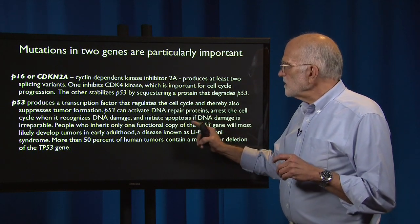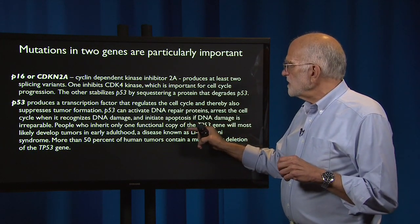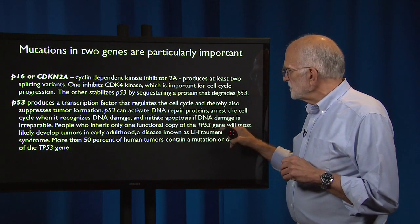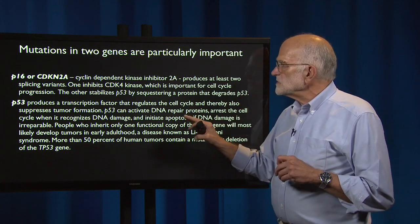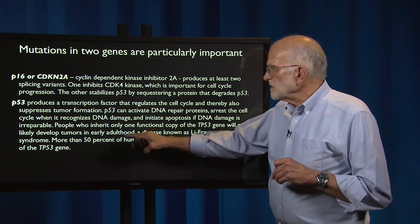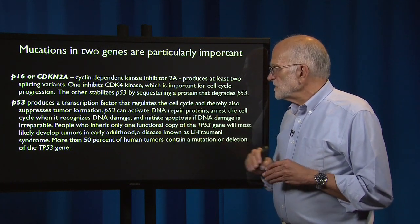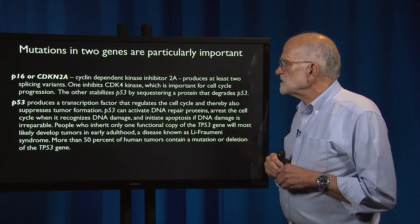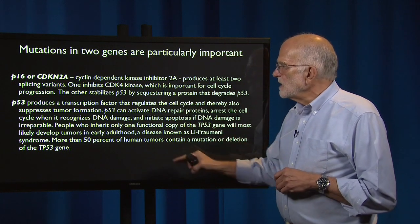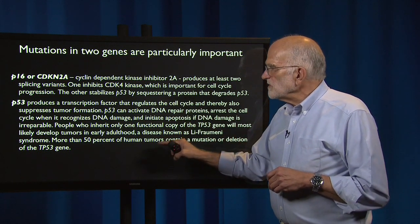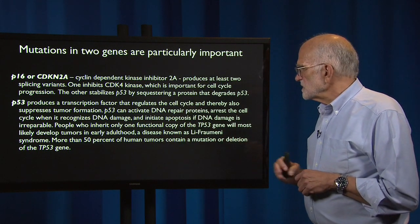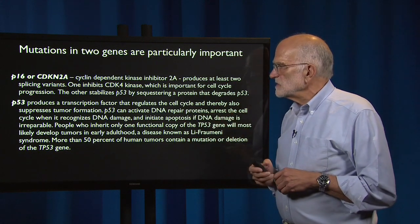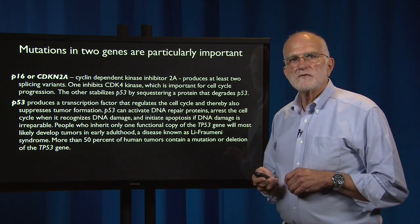People who inherit only one functional copy of the TP53 gene will almost certainly develop tumors in early adulthood. This is a disease known as Li-Fraumeni syndrome. More than 50% of human tumors contain a mutation or deletion in the TP53 gene.